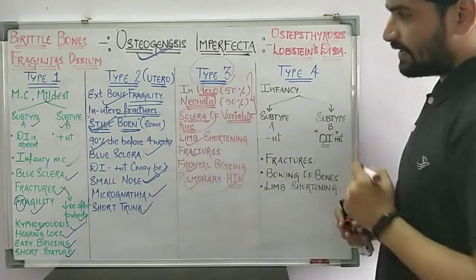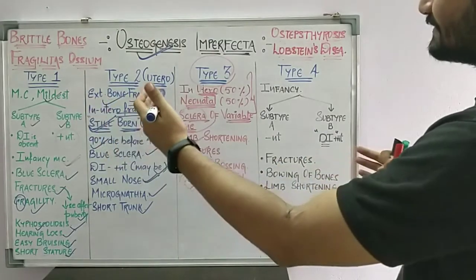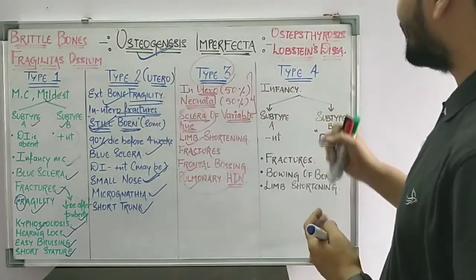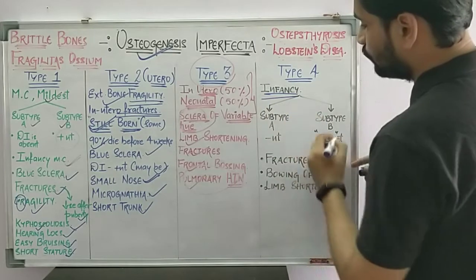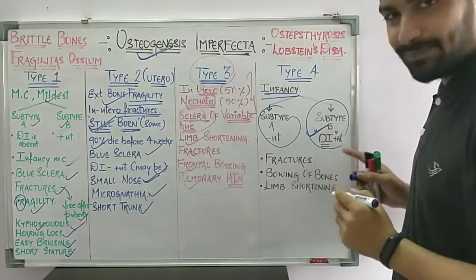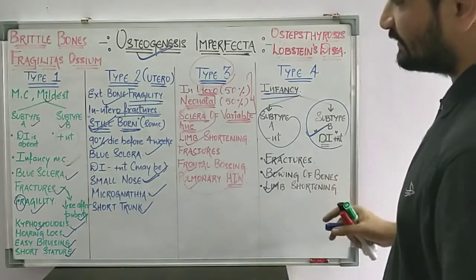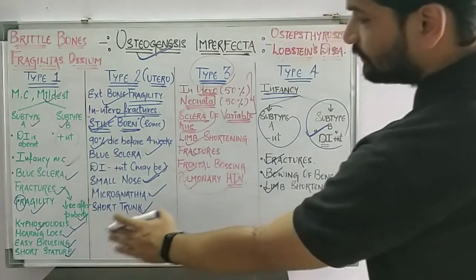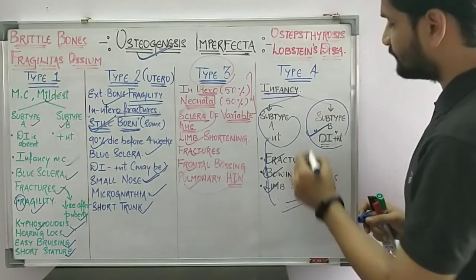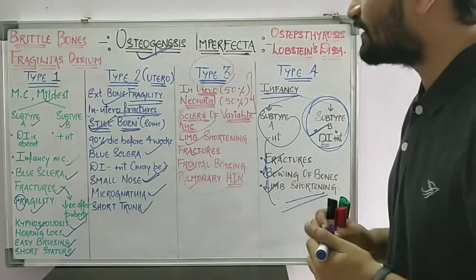Type 4 is again somewhat similar to Type 1, as both are commonly seen in infancy. Subtypes A and B are present — in subtype B, dentinogenesis imperfecta is present. There will be fractures, bowing of legs, and limb shortening. However, there is no blue sclera, no hearing loss, no frontal bossing, and no pulmonary hypertension.